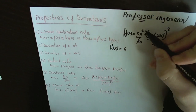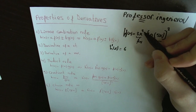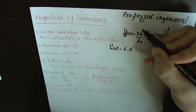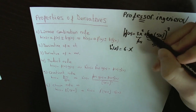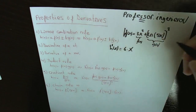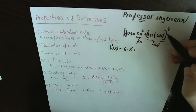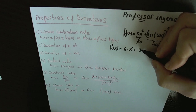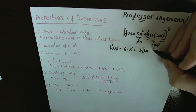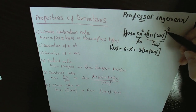The derivative of 3x squared: the power two goes down and multiplies three, giving six. Then x with power two minus one, so we get 6x. Then we need to derivate the logarithm function — the power three goes down and multiplies, giving three times the logarithm of 5x to the power two.